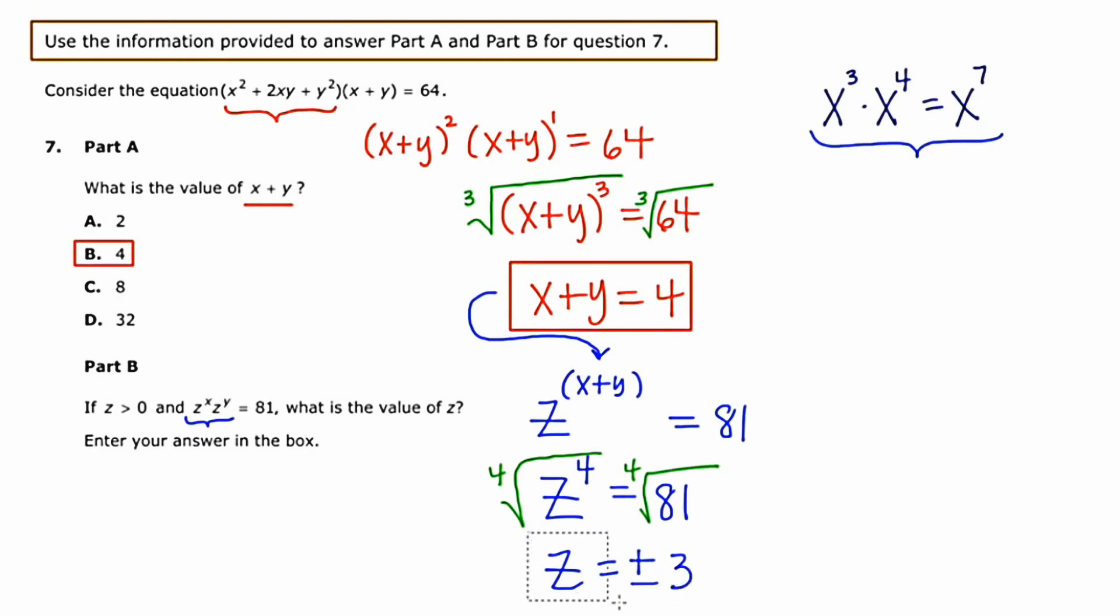But the question stipulates that we're only supposed to consider when z is greater than 0. So right here it says z is greater than 0, which means I'm only going to look at one of these answers. And the answer is going to be z equals positive 3. That's the only answer that meets the initial condition.